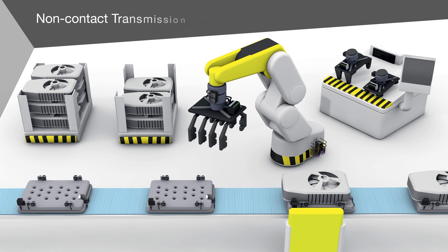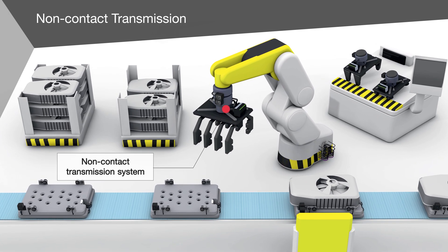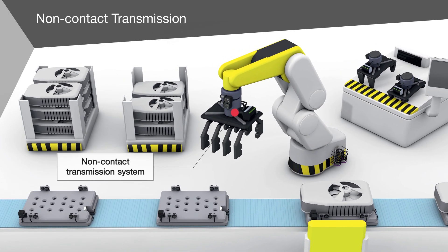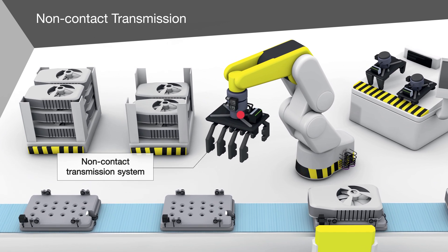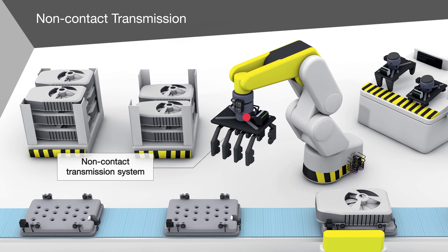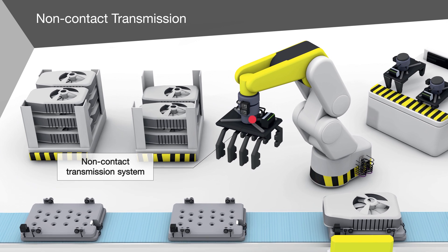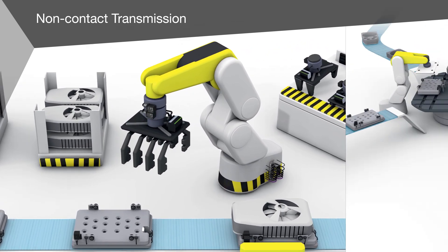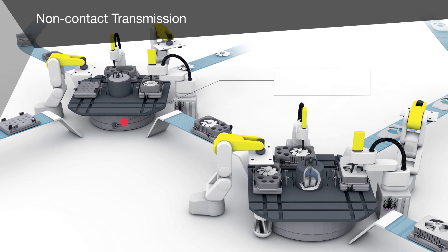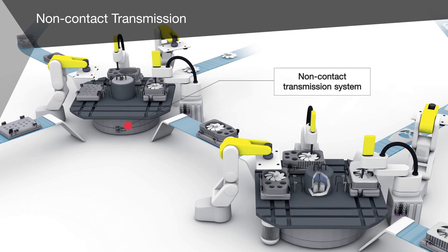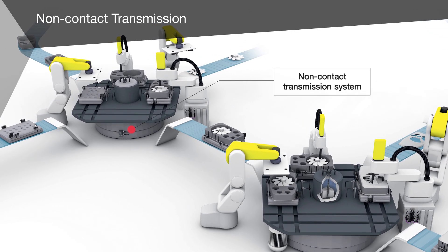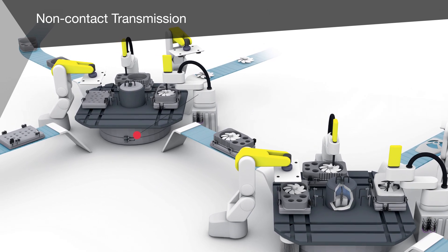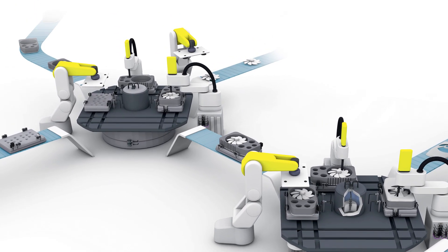In addition, there are non-contact transmission systems which pass signals and power in especially critical applications. Here, the system is used between the robot arm and gripper so that automatic gripper changing is possible. The system can also be used between the rotary index table and the PLC, enabling data and power transmission at every position of the rotating table.